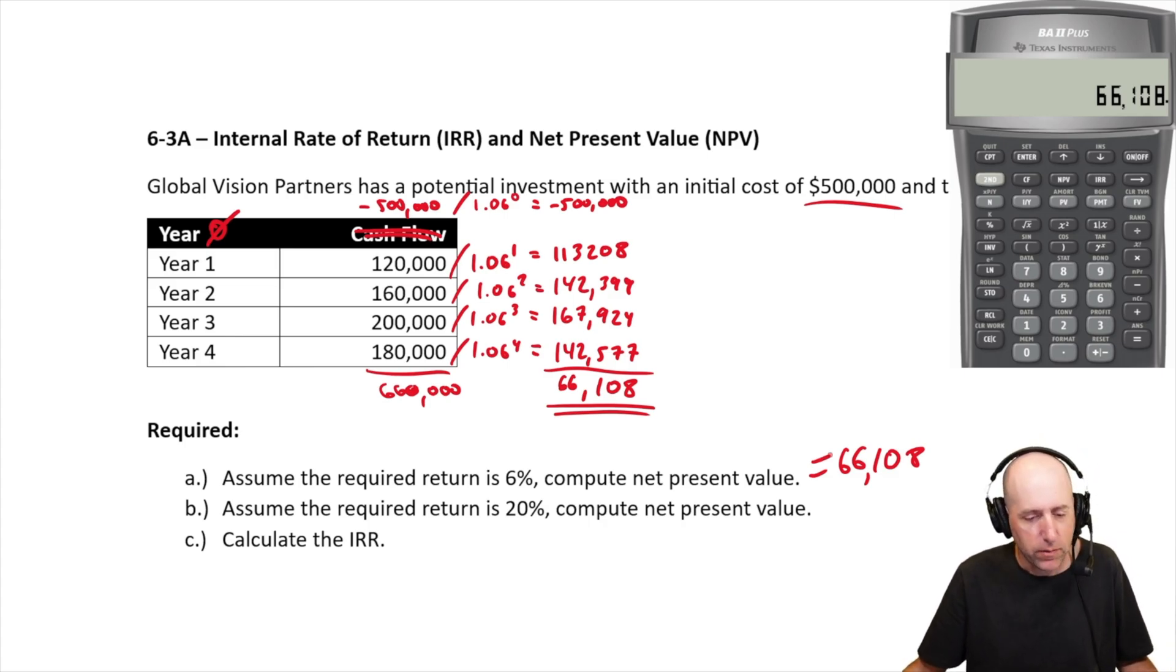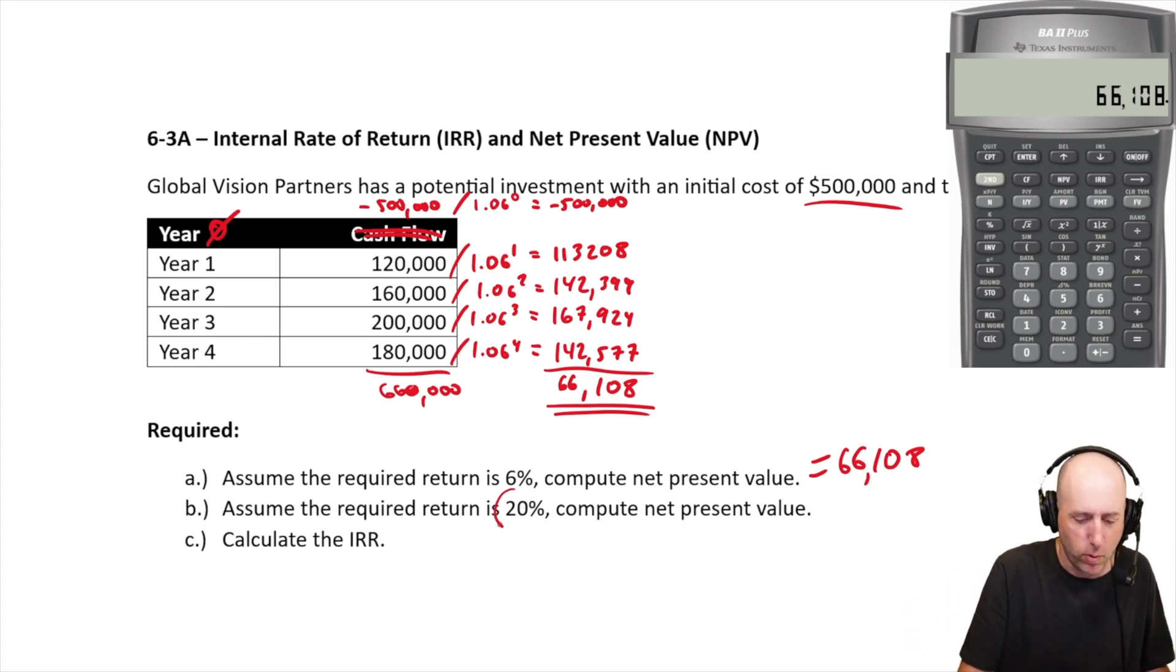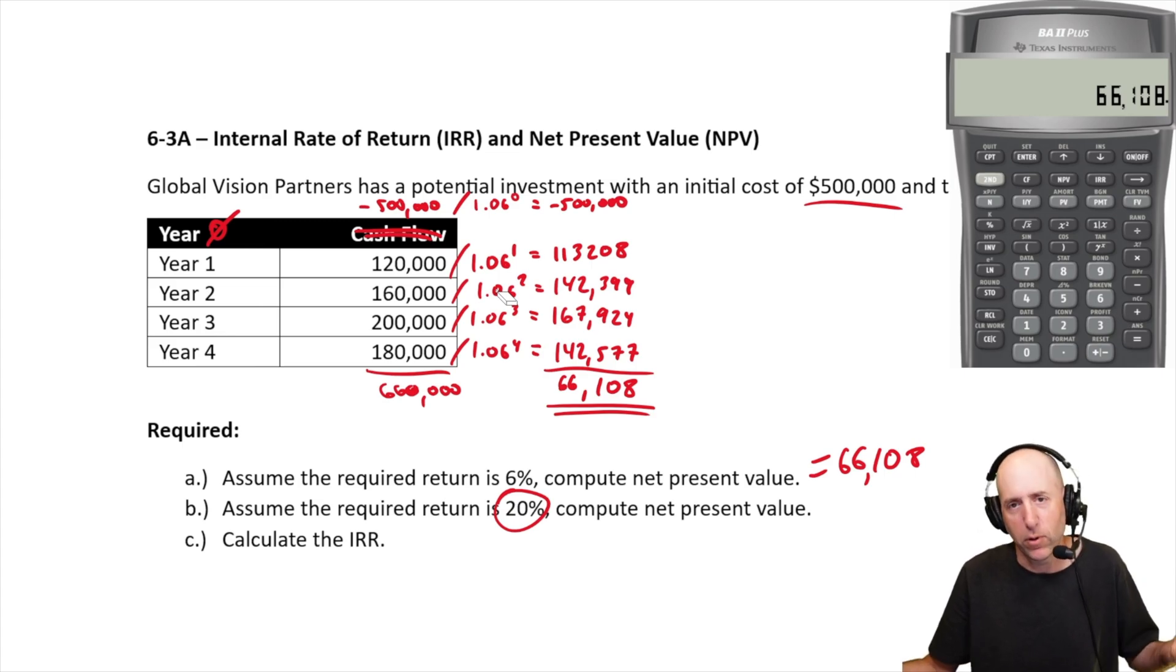Okay, so we've solved part A by hand. And now, we'll do everything else in the financial calculator. You could do part B by hand, just the same thing. It's just 20%, so everything here, the 0.06s would change to 0.2, 1.2 to the 0, 1, 2, 3, 4th power. But we don't need to run through that again when we have a financial calculator that'll make our life easier.